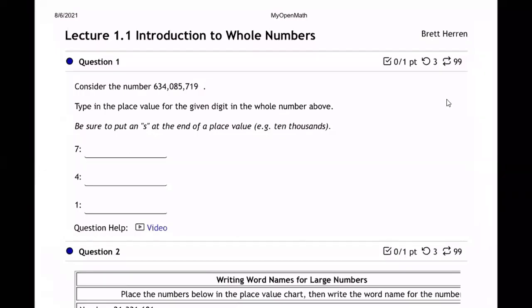All right, let's take a look. We're on lecture 1.1, question one. Consider this number. So here's my number. You're going to have a different number. Type in the place value for the given digit.